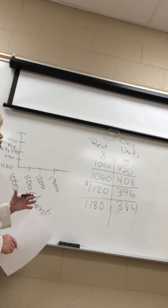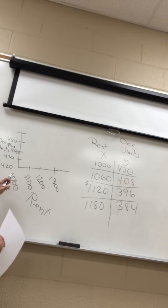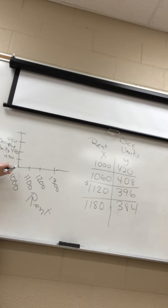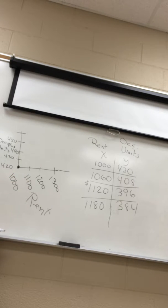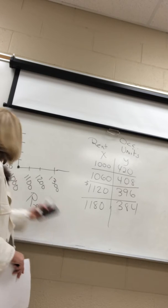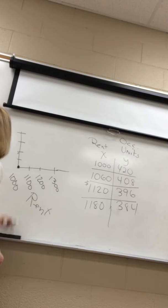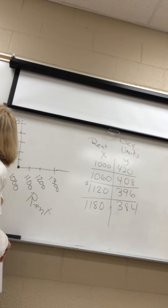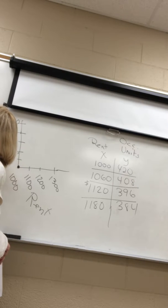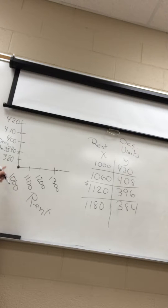Since it's a linear function, let's graph it. At $1000 rent, there are 420 units occupied, so that's your first coordinate. Then $1060 would be about right here, and up to 408. The 420 starts at the top and goes down — 410, 400, 390, 380.